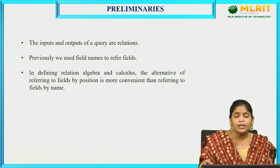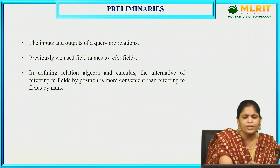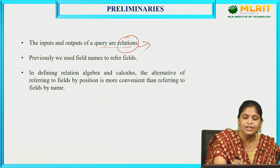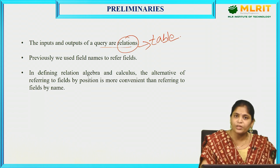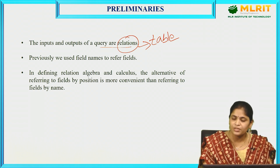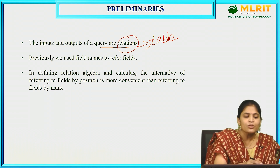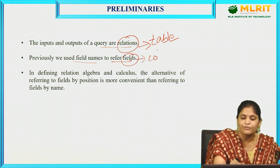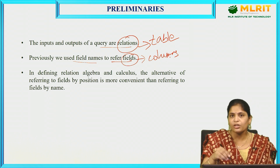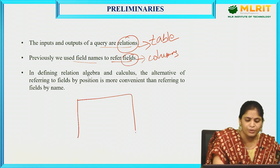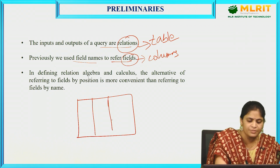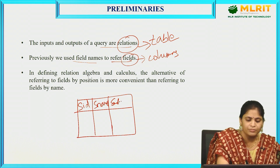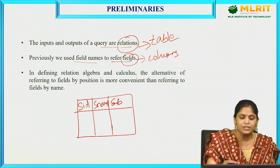The inputs and outputs of queries are nothing but relations. In the context of DBMS, a relation is nothing but a table — it contains a set of rows and columns where we store data. Previously, we used field names to refer to fields, which are nothing but columns. For example, a student table might have columns SID, SNAME, and SMOBILE NUMBER — representing student ID, student name, and student mobile number.